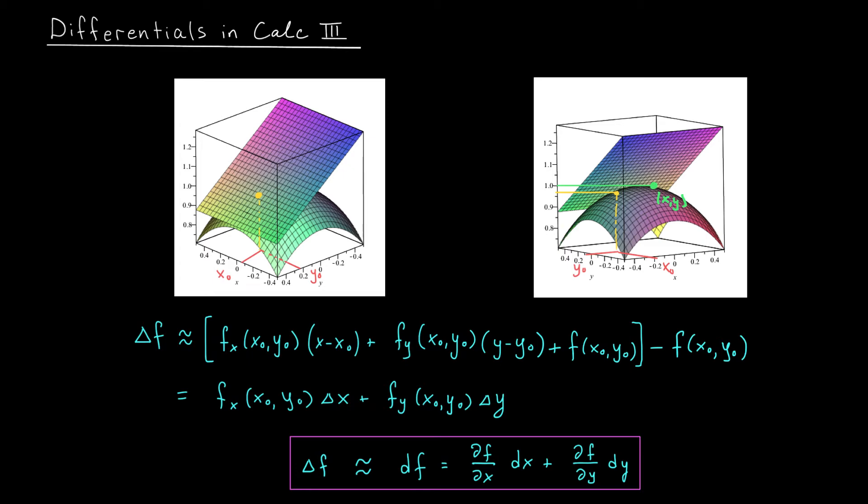But just like before, we can approximate this change. We no longer have a tangent line, we have a tangent plane, but it still plays the same role. The change in height of my function is approximately equal to the change in height of my tangent plane, as long as this green point is pretty close to the point at which I started. So the actual change in the height of our function, delta f, is approximately equal to the change in height of our tangent plane.